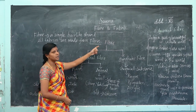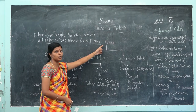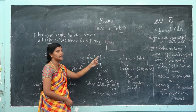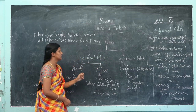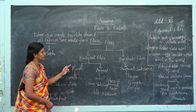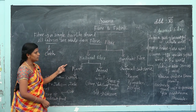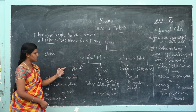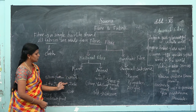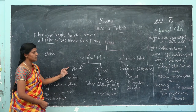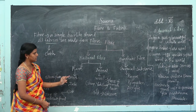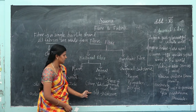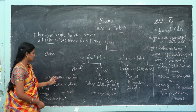Now we see about fiber. Fibers are classified into two types: one is natural fiber and another one is synthetic fiber. Natural fibers are obtained from plants and animals. The examples of natural plant fibers are cotton, jute, and coir. The examples of animal fibers are wool and silk.